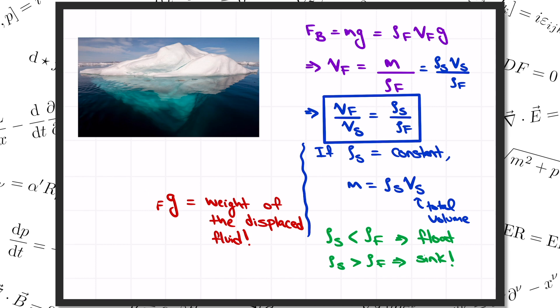So why does an iceberg float on the surface of the ocean? And how much of the iceberg is actually lurking beneath the surface where you can't see it? Well, the density of liquid water is about 1,000 kilograms per cubic meter. Actually, this is slightly different for ocean water because of the salt content. But let's just try to get a rough estimate here.